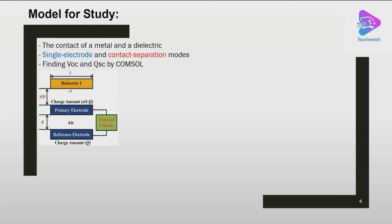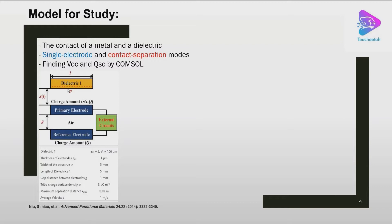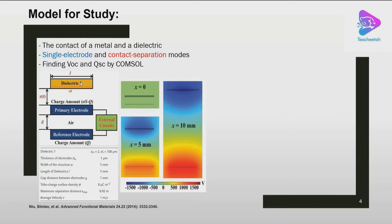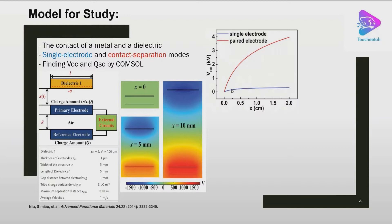Here is the model we are going to use, selected based on a reference paper, which covers both the single electrode mode and contact separation. This figure shows the operation of single electrode mode with contact between a dielectric and a metal. The dielectric freely touches and separates from the contact metal, causing charge flow to a reference electrode. We are going to find results such as the electric potential distribution as the dielectric moves away from the contact electrode, as well as the open circuit voltage for the single electrode and paired electrode modes.